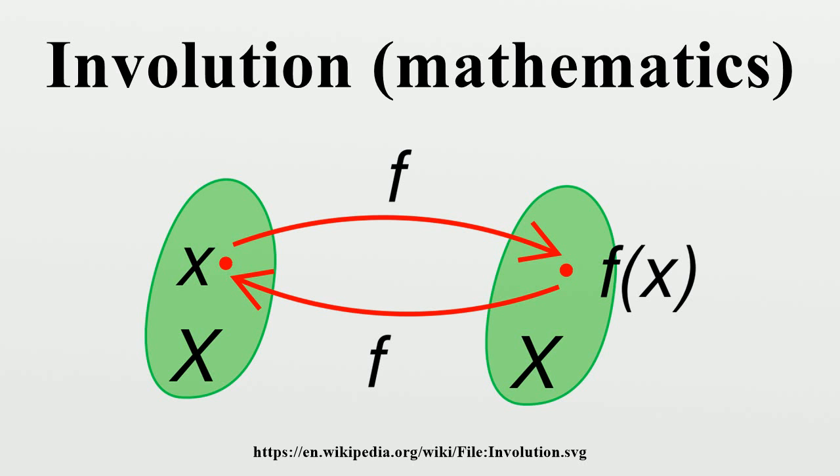This definition extends readily to modules. Given a module M over a ring R, an R endomorphism F of M is called an involution if F squared is the identity homomorphism on M. Involutions are related to idempotence. If 2 is invertible then they correspond in a one-to-one manner.